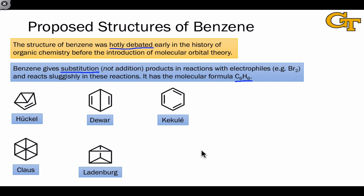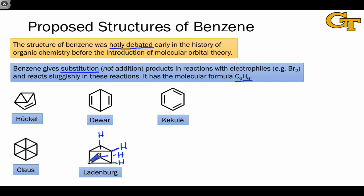Some of these proposals look ridiculous in hindsight, especially given techniques like nuclear magnetic resonance, which would allow us to rule out Hückel's benzvalene structure because it has distinct types of hydrogens — whereas the NMR spectrum of benzene has only one peak. The structures by Claus and Dewar have bonds that cut across the six-membered ring, which don't make much geometric sense, but try to illustrate ideas of electron delocalization that were brewing in these chemists' minds even before molecular orbital theory. Ladenburg's trigonal prism structure is notable because this molecule actually does have six homotopic hydrogen atoms, and from a spectroscopic perspective would look a lot like benzene.